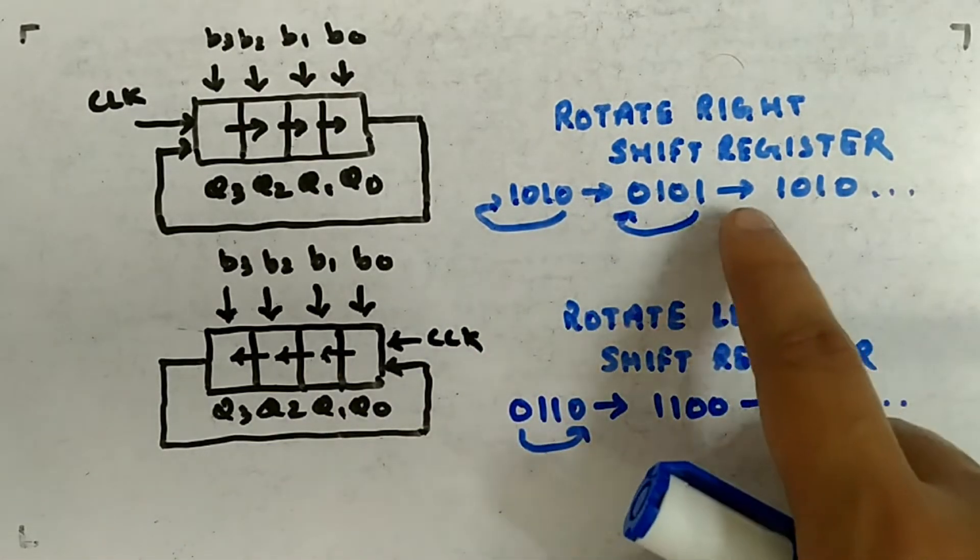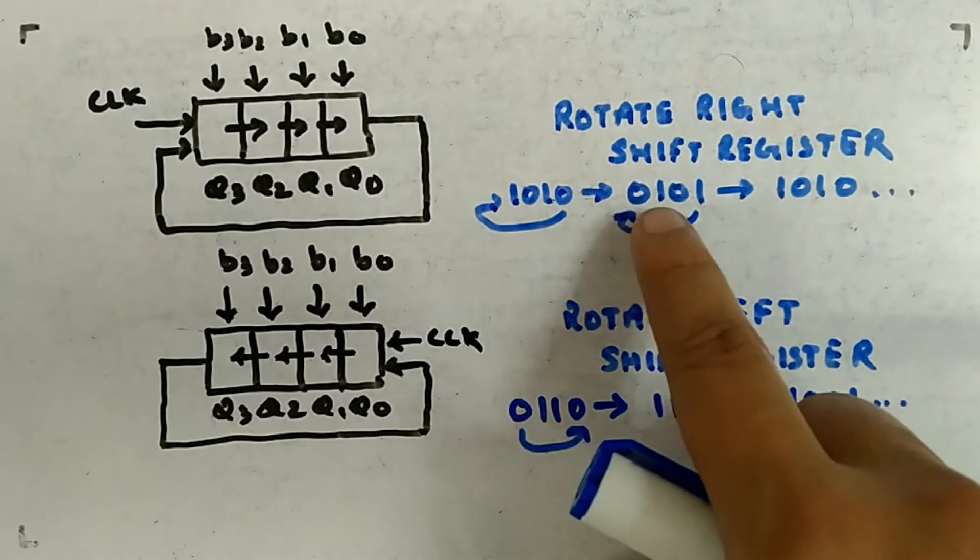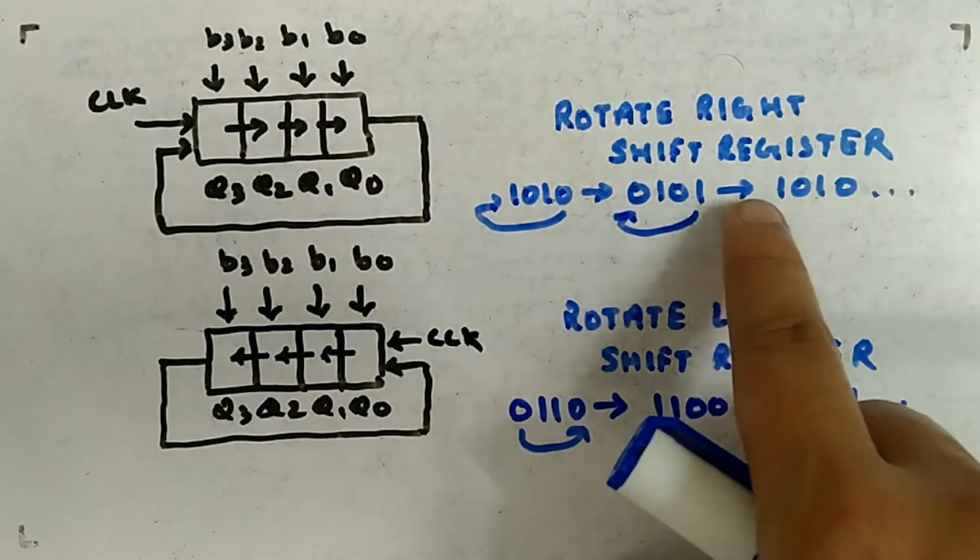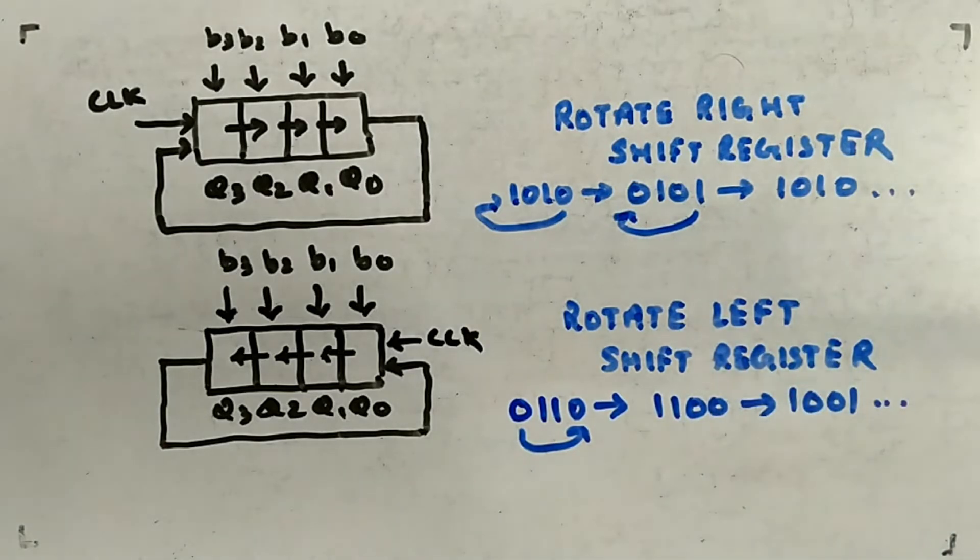Next clock pulse, this one will come here, 0 will shift, 1 will shift, 0 will shift - 1010 again. Likewise it can go. So this is called right shift register.